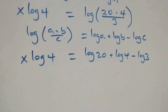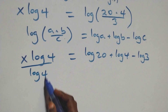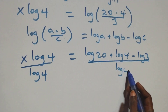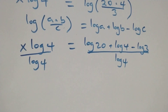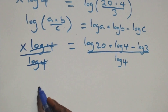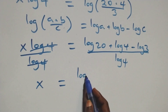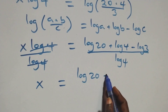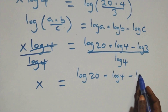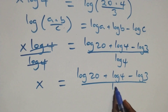Then here we divide by log 4 on both sides. Log 4 cancels each other, and we have x equals to log 20 plus log 4 minus log 3, all over log 4.